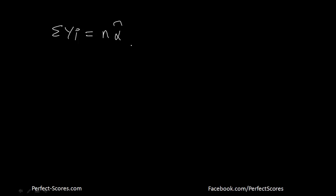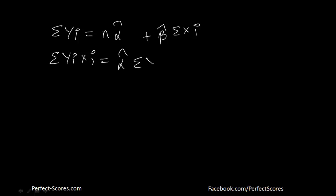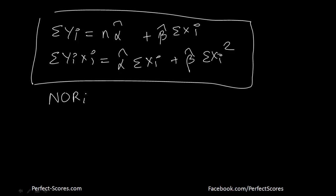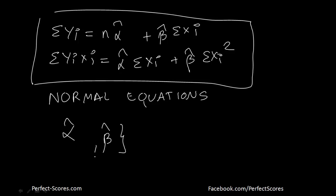So we have gotten these two equations: summation of yᵢ equals n·α̂ plus β̂·summation of xᵢ, and summation of yᵢxᵢ equals α̂·summation of xᵢ plus β̂·summation of xᵢ². We call both these equations the normal equations. Based on these two equations, we're going to be calculating the values of α̂ and β̂ in the next video.